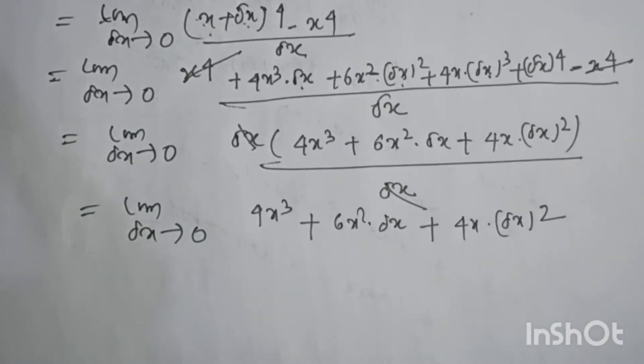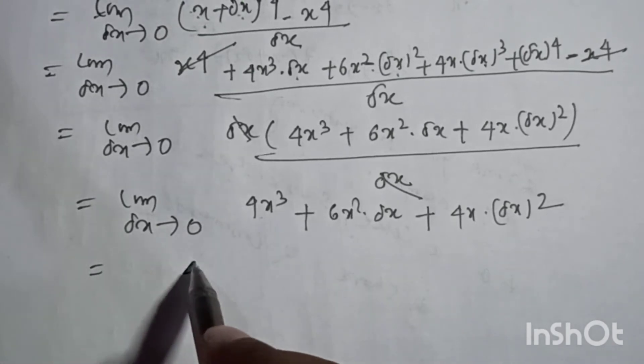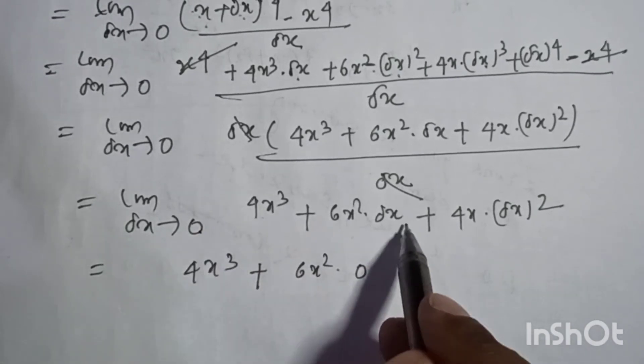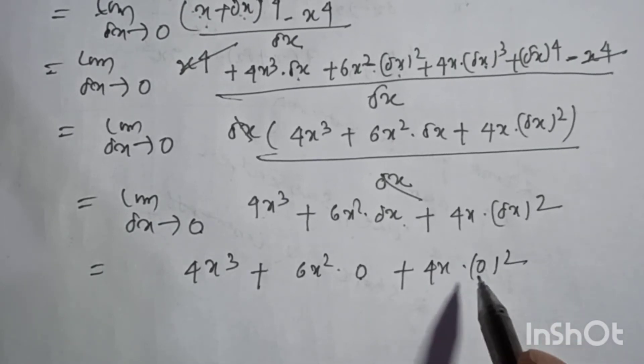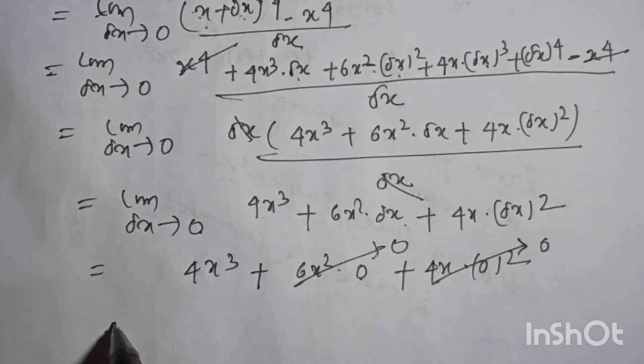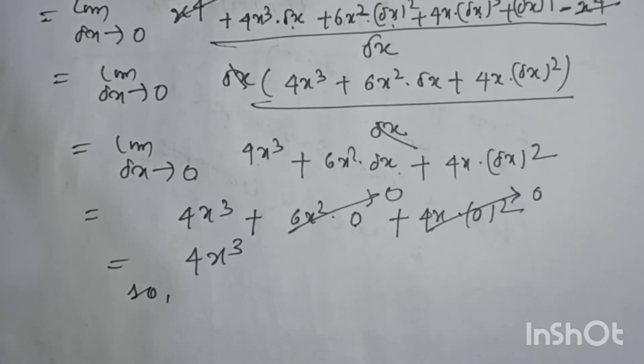Putting the limit value: 4 x cube plus 6 x square into 0 plus 4 x into 0 square plus 0 cube. This part becomes 0, that is 4 x cube.